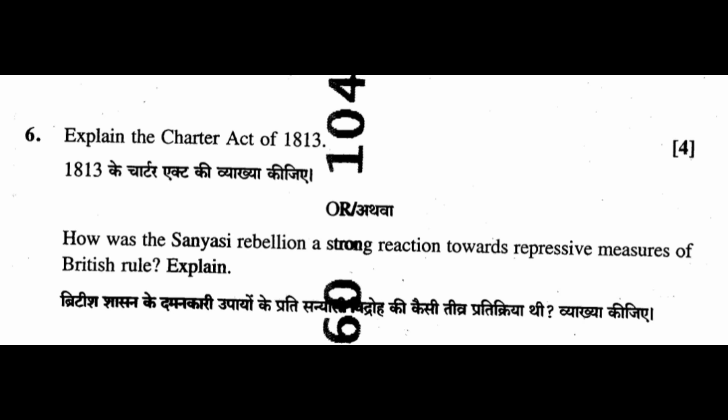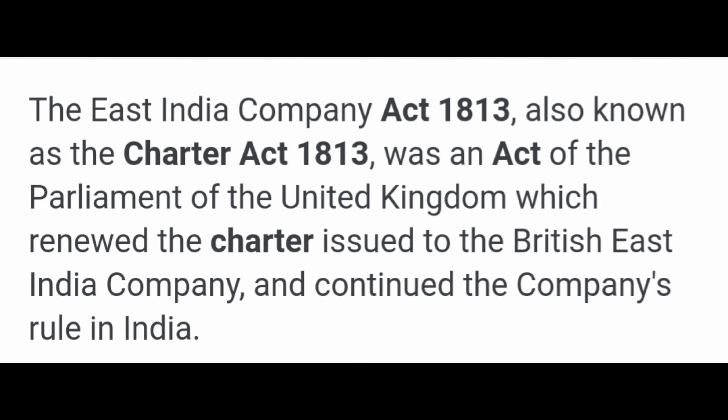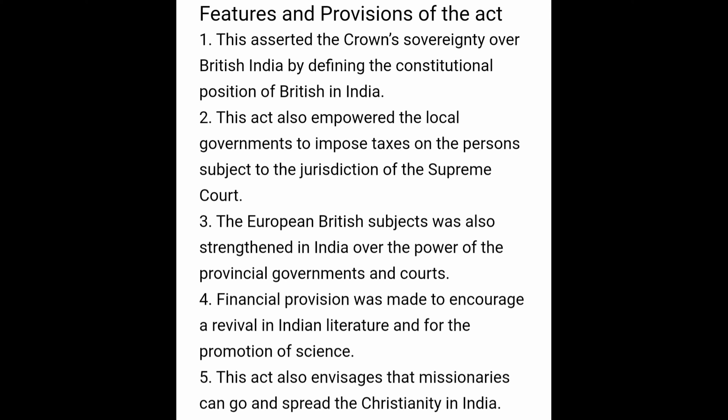Question 6: Explain the Charter Act of 1813. The East India Company Act 1813, also known as the Charter Act 1813, was an act of the Parliament of the United Kingdom which renewed the charter issued to the British East India Company and continued the company's rule in India. Its features: (1) It asserted the Crown's sovereignty over British India by defining the constitutional position of British India. (2) The act empowered local government to impose taxes on persons subject to the jurisdiction of the Supreme Court. (3) European-British subjects were strengthened in India over the power of provincial governments and courts. (4) Financial provision was made to encourage the revival of Indian literature and further promotion of science. (5) This act also allowed missionaries to go and spread Christianity in India.